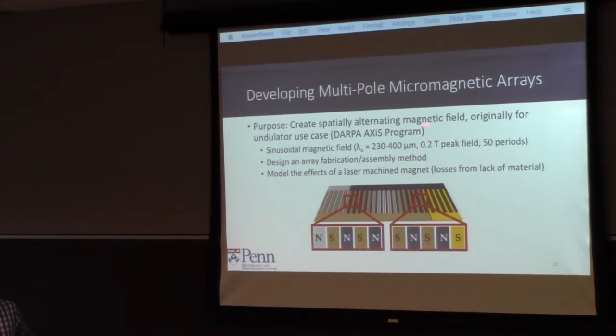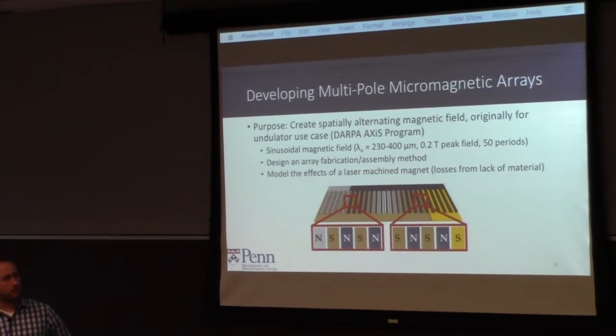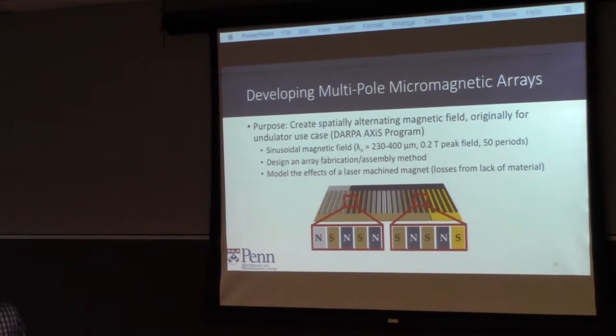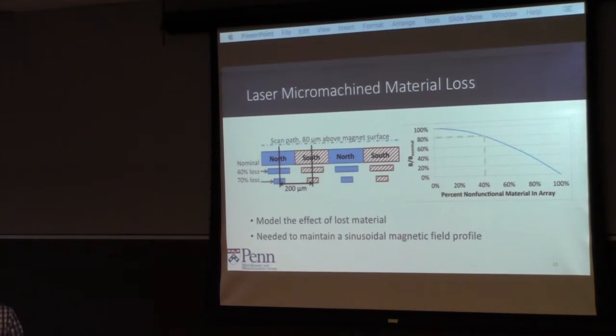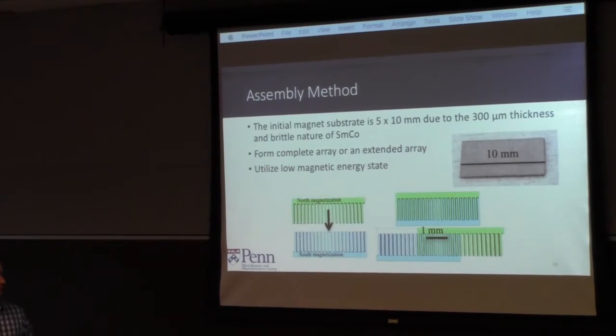With this project, we needed to have a magnetic field periodicity between 200 and 500 microns. I actually have an example here of a 400 micron setup. And then have at least 0.15 Tesla above the surface of the magnet, and enough periods to generate x-rays as the electron travels in that field. We also needed to model how much the lost laser material was going to affect this north-south structure. What we discovered is that with 40% lost material between poles, we only lose about 20% of the overall sinusoidal amplitude, which was really good for us.